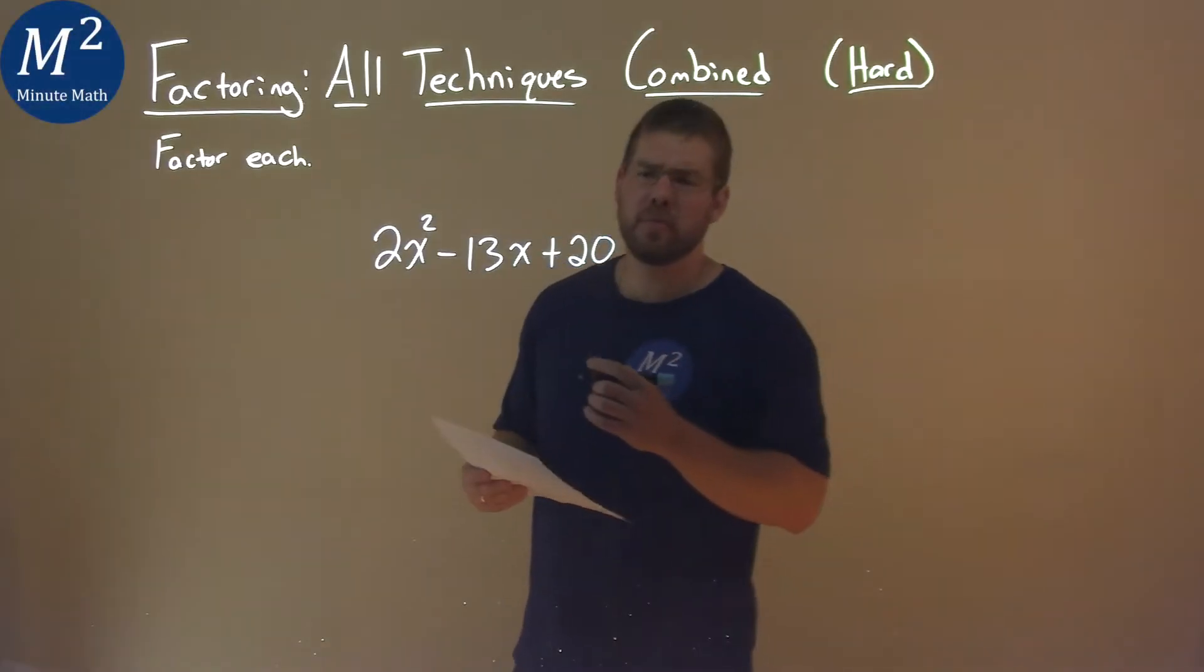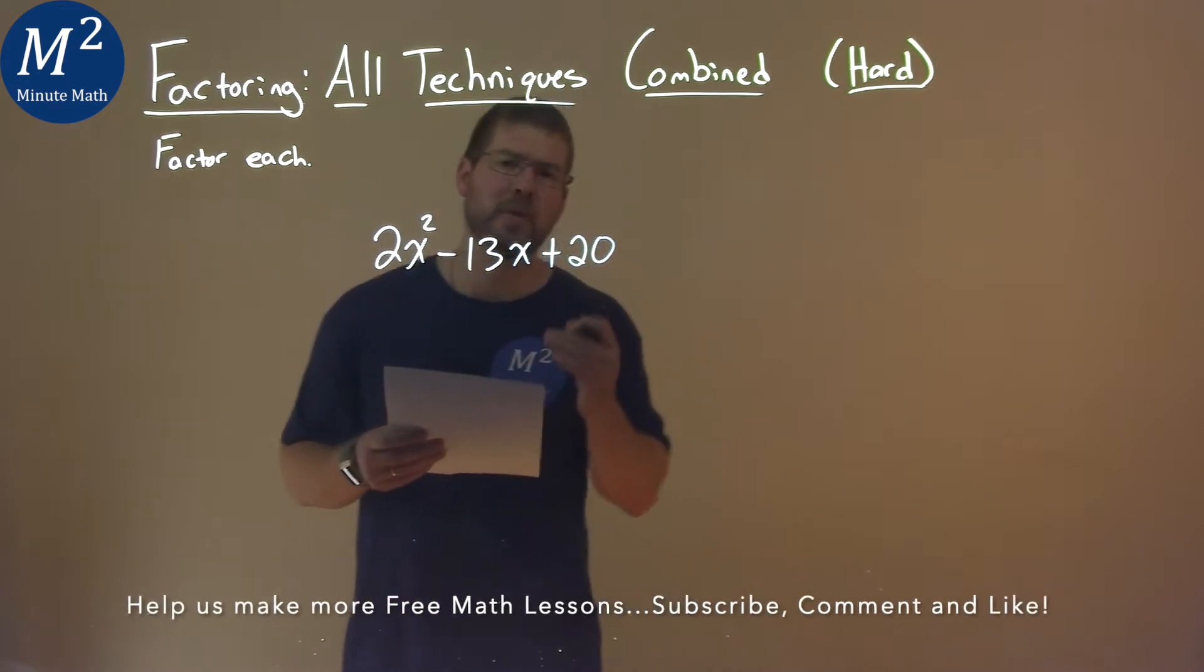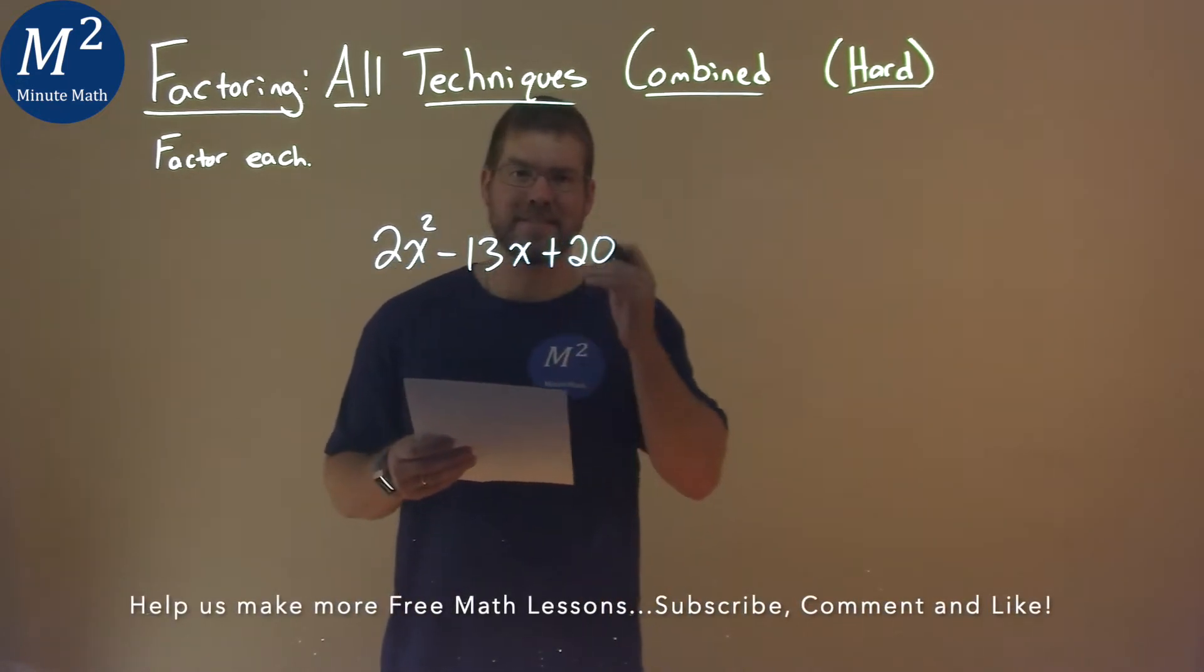We're given this problem right here, 2x squared minus 13x plus 20, and we've got to factor this completely.